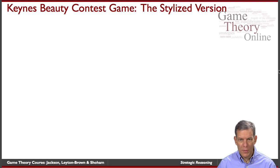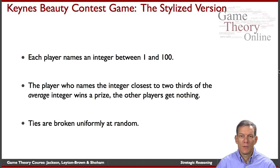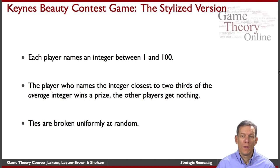Remember what the structure of this game was: each player named an integer between 1 and 100. You've got a population of players all naming integers. The person who names the integer closest to two-thirds of the average integer named by people wins, other people don't get anything, and ties are broken uniformly at random.